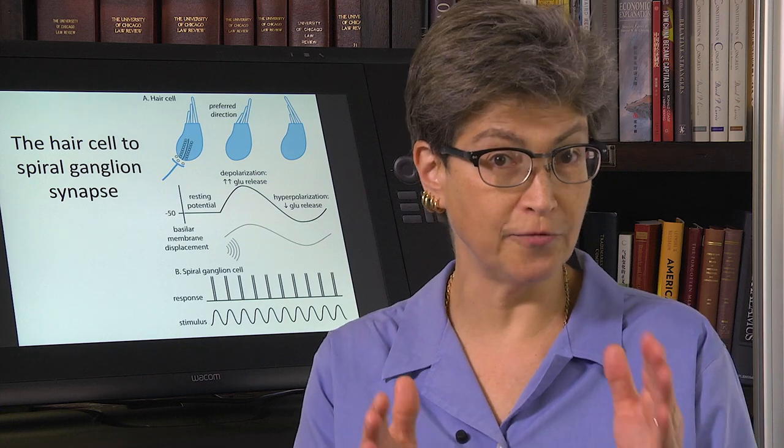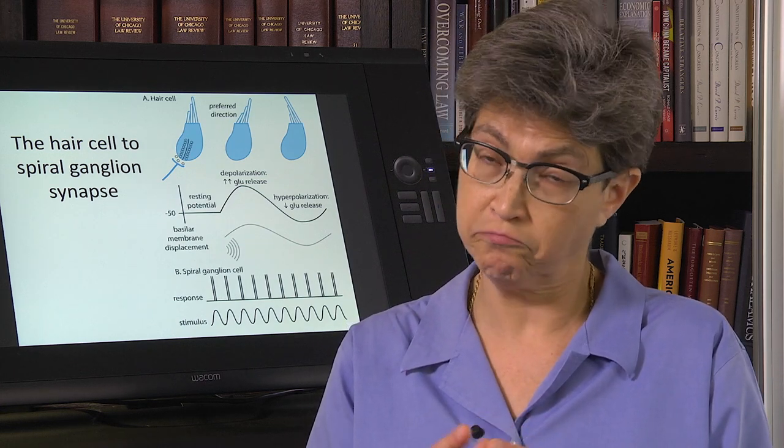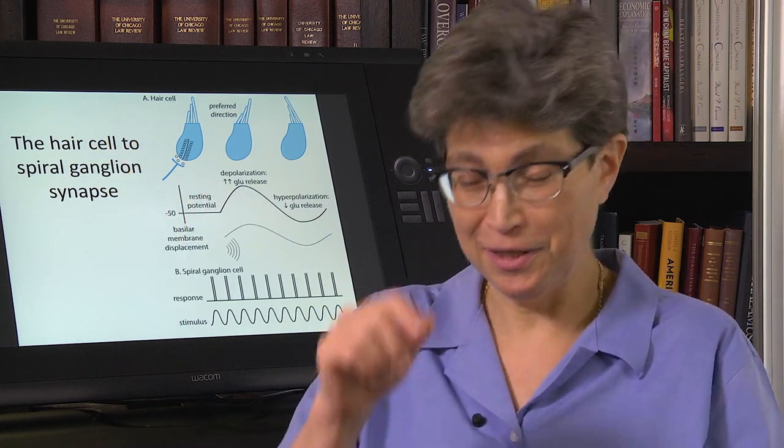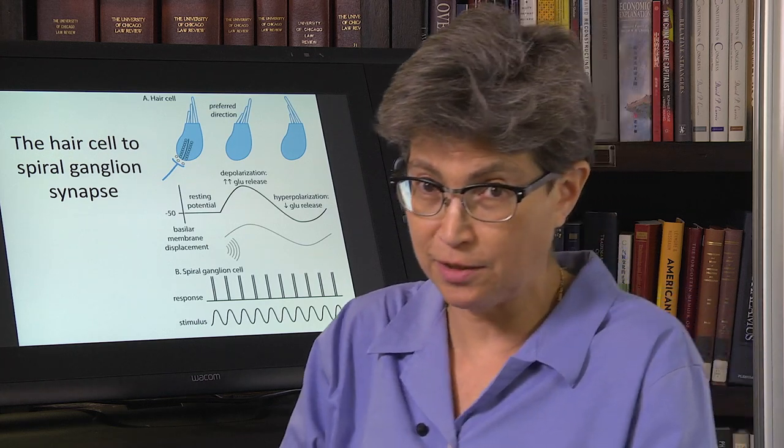Remember when we were in the retina, the photoreceptor we didn't talk about it much, but the photoreceptor has no axon. Why doesn't it have an axon? Because it has nowhere far to go. It just has a synaptic terminal that terminates right on the next cell in line, which is the bipolar cell.